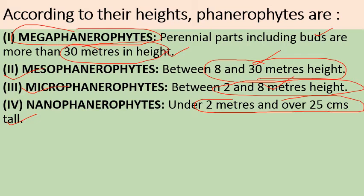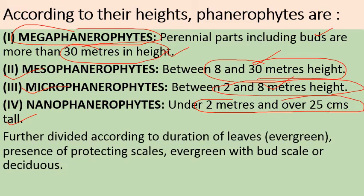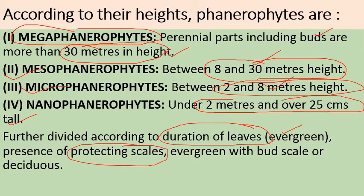Phanerophytes are further divided according to the duration of leaves. If leaves stay throughout the year, those are known as evergreen. Further sub-division is based on the presence of protective scales on buds. On the basis of this, they may be classified as evergreen with bud scales, or deciduous — meaning those plants which shed their leaves in winter.